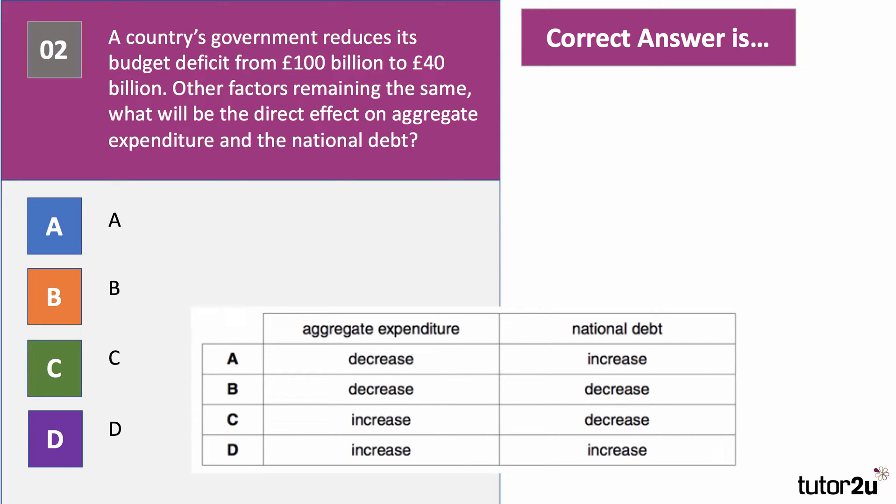Question two: a country reduces the budget deficit from 100 billion to 40 billion. Other factors remaining the same, what will be the effect on aggregate expenditure or aggregate demand, and on the national debt? Have a go at this question.